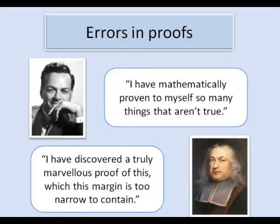These examples are frivolous but there are plenty of cases of very good mathematicians proving erroneous proofs. The great Richard Feynman once said, I have mathematically proven to myself so many things that aren't true. The most notorious example is Fermat's claimed but presumably incorrect proof of his last theorem.